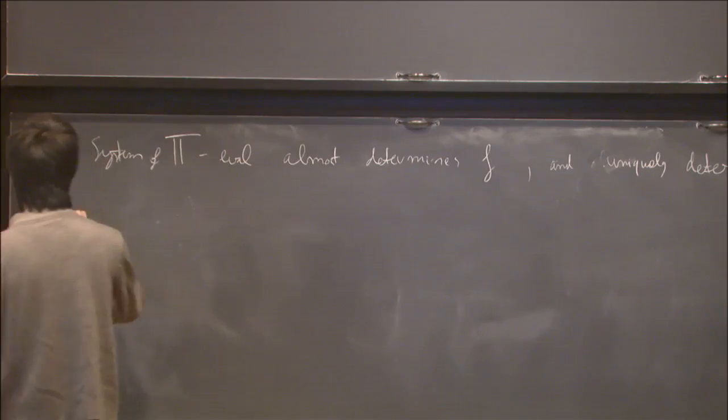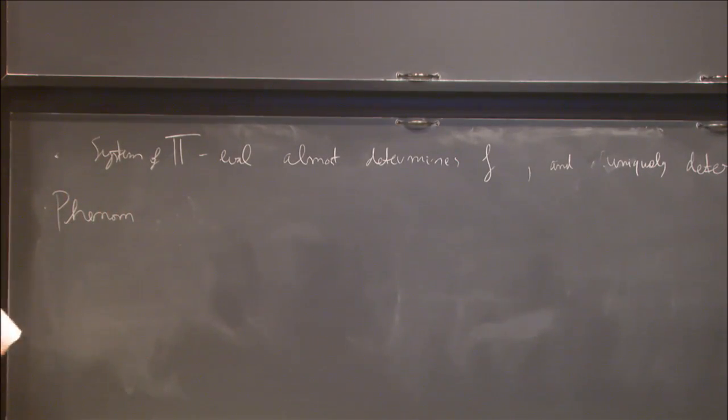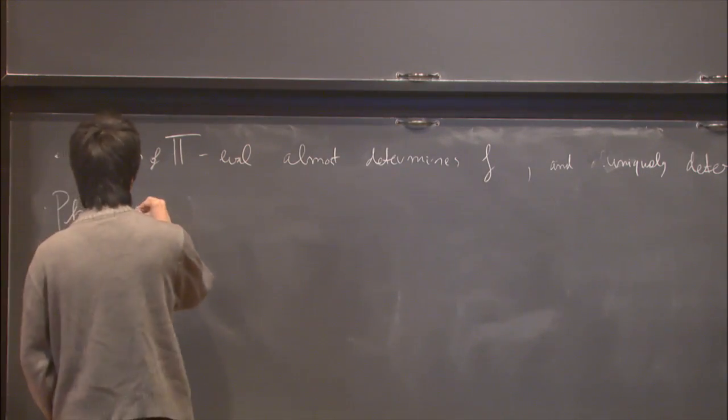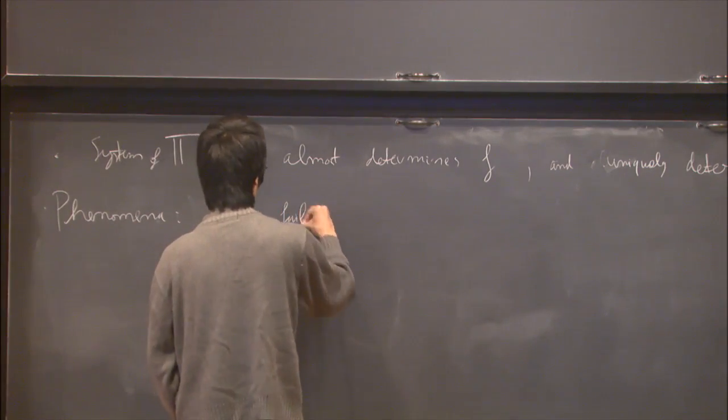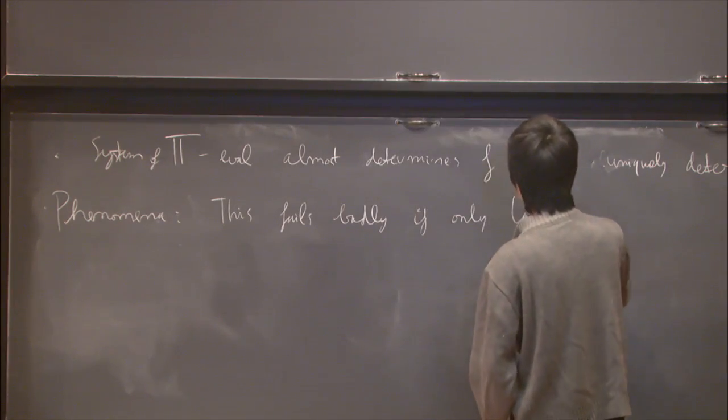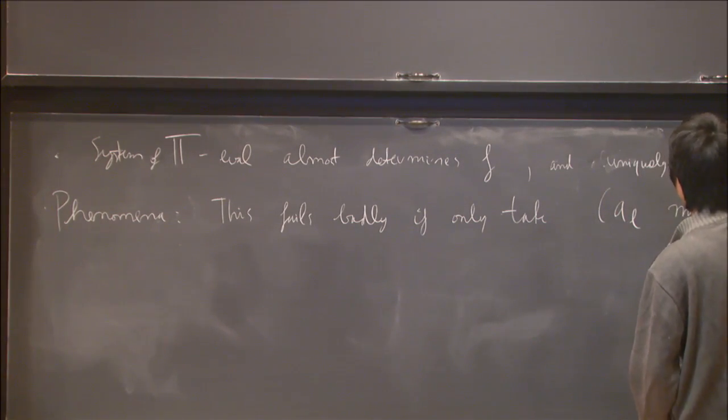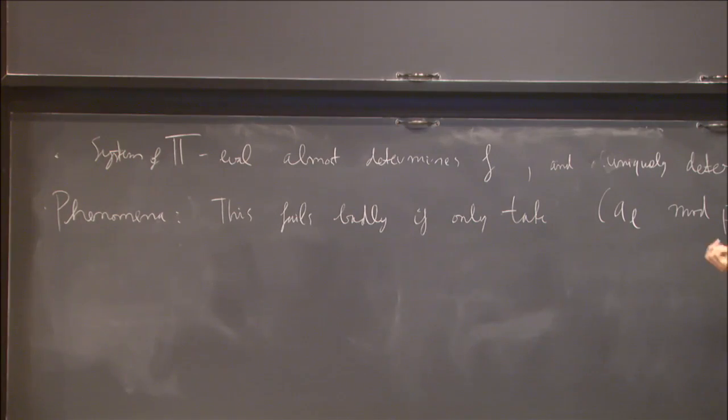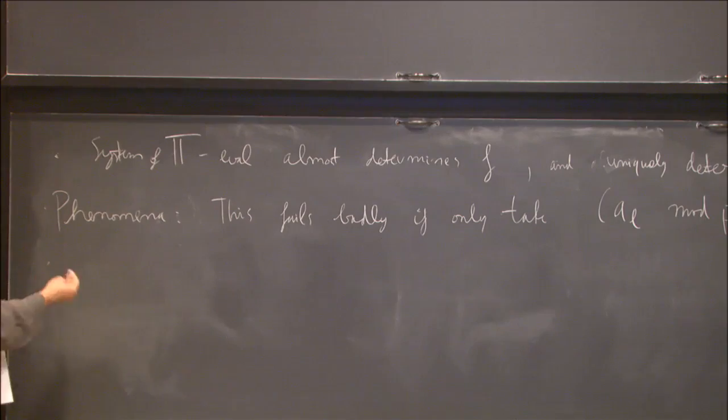And the phenomena that I want to describe here is that this completely fails if I, instead of taking the entire system of Hecke eigenvalues, I take the system mod a prime p. This fails badly if I only take this system mod a prime p. And the fact that this phenomena happens is extremely important in number theory. And that's all I'm going to say. The rest of the talk, I'll actually study the phenomena.